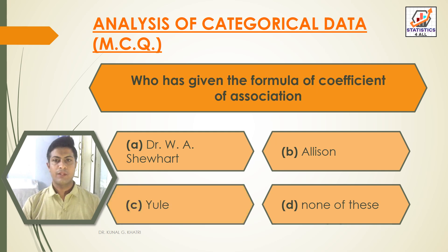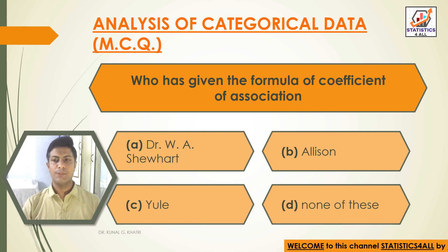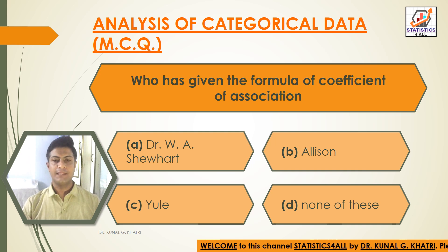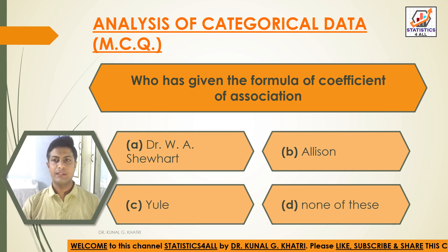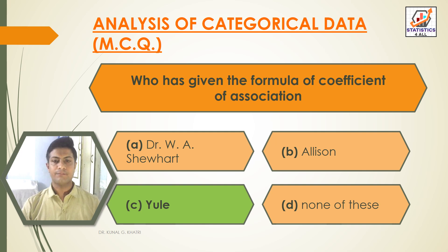Next question: who has given the formula of the coefficient of association? Option A: Dr. W. S. U. Hart, option B: Allison, option C: Yule, option D: none of these. The answer is option C — Yule has given the formula of the coefficient of association.